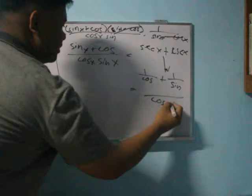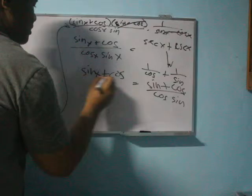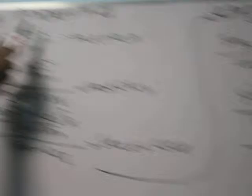This would be written as 1 over cos x plus 1 over sin x. So this is also the same as sec x plus csc x.